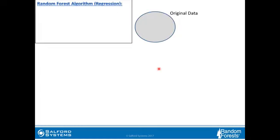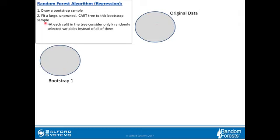That brings us to the random forest algorithm for regression. What we do is draw a bootstrap sample from the original data, and then fit a large, unpruned CART tree to this bootstrap sample. The twist is that at each split in the tree, we consider only k randomly selected variables instead of all of them.